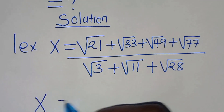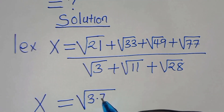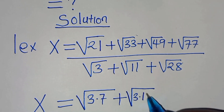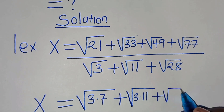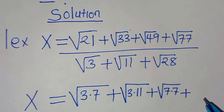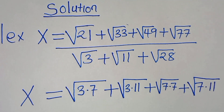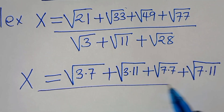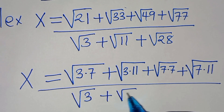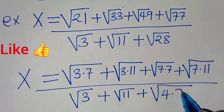The next step is that x is equal to: square root of 21 expressed as square root of 3 multiplied by 7, plus square root of 33 which is square root of 3 multiplied by 11, then plus square root of 49 which is square root of 7 multiplied by 7, then plus square root of 77 expressed as square root of 7 multiplied by 11. Everything divided by square root of 3 plus square root of 11, plus square root of 28 expressed as square root of 4 multiplied by 7.